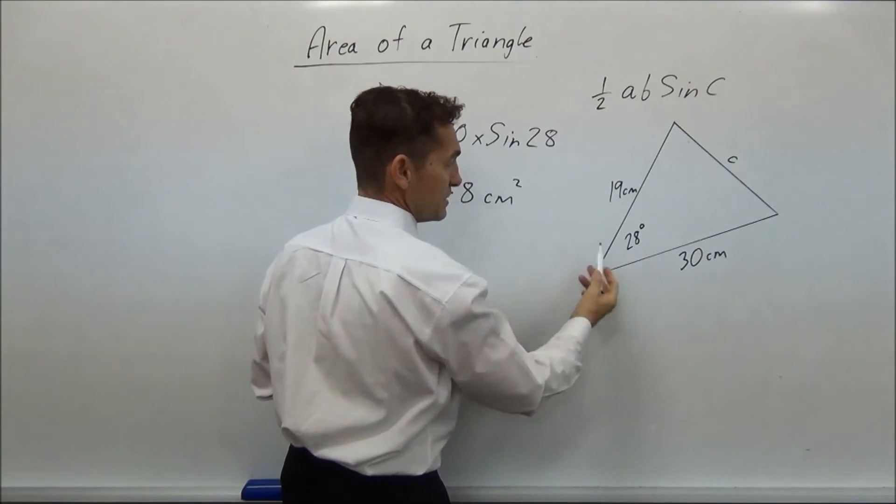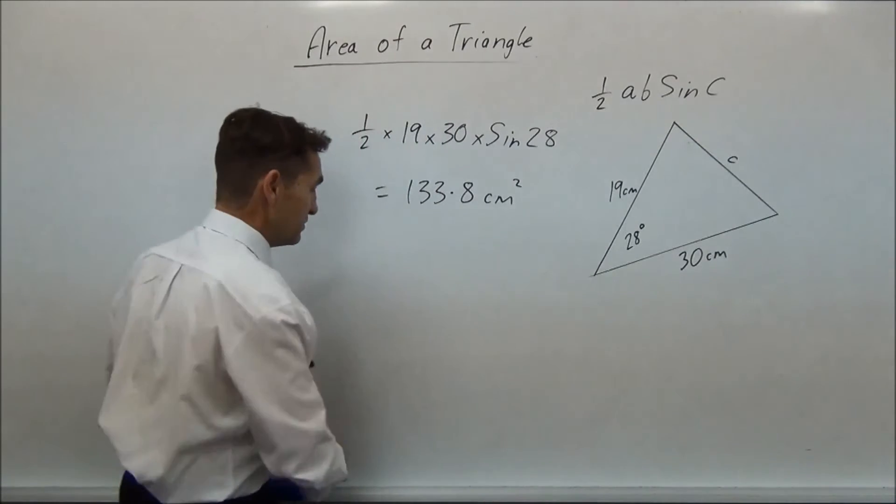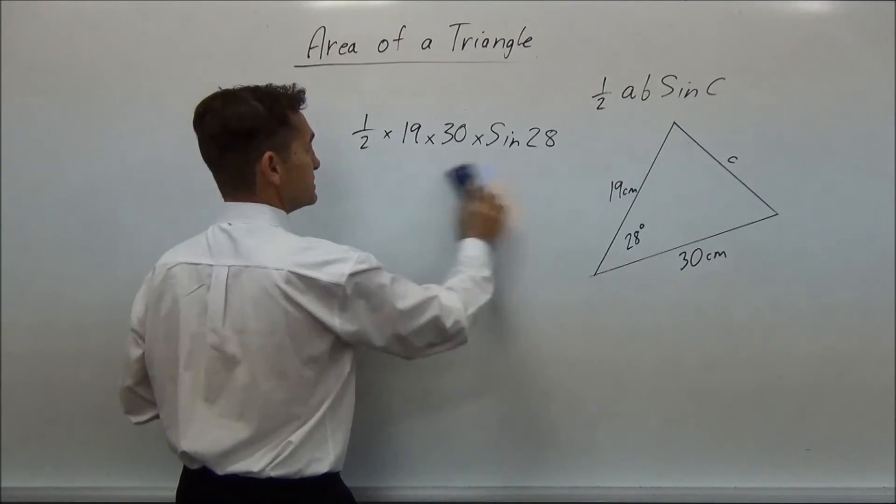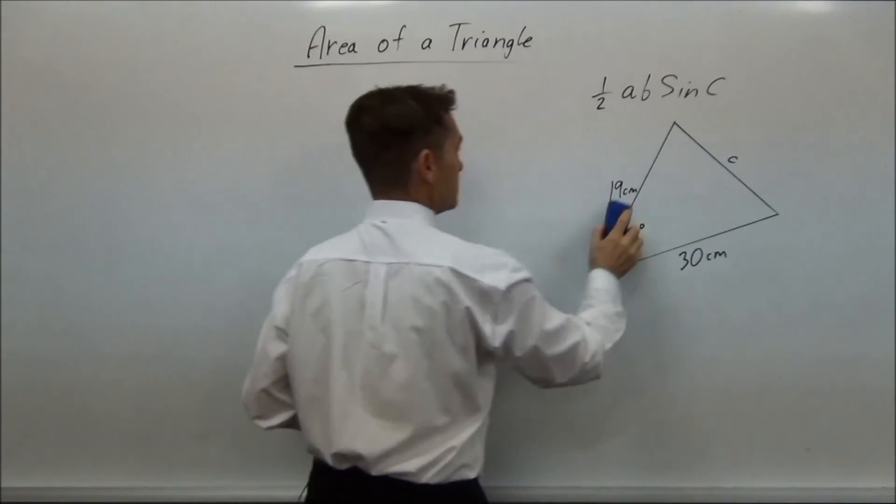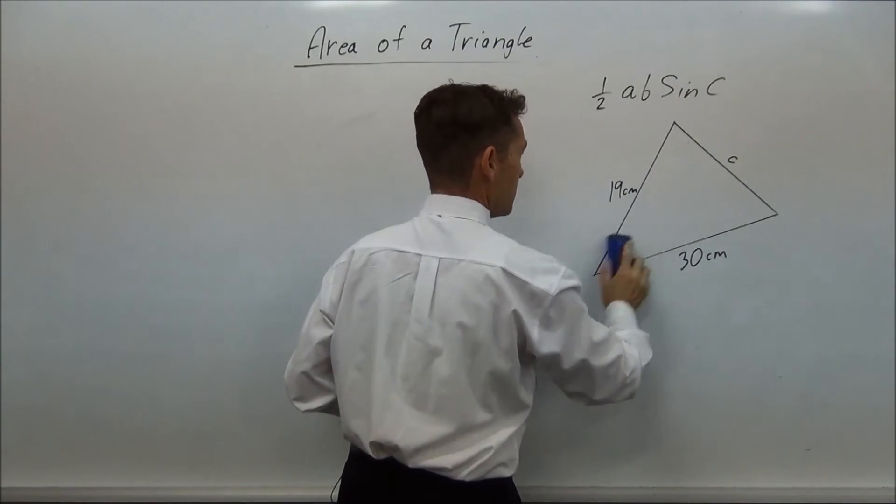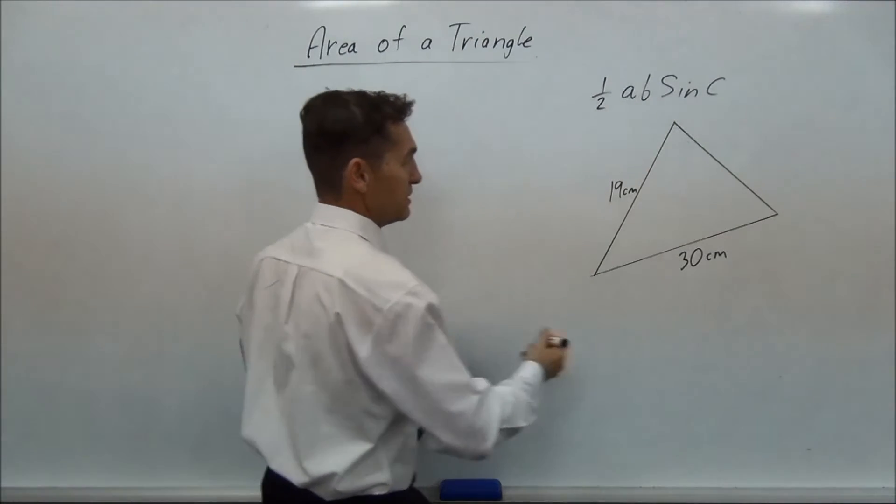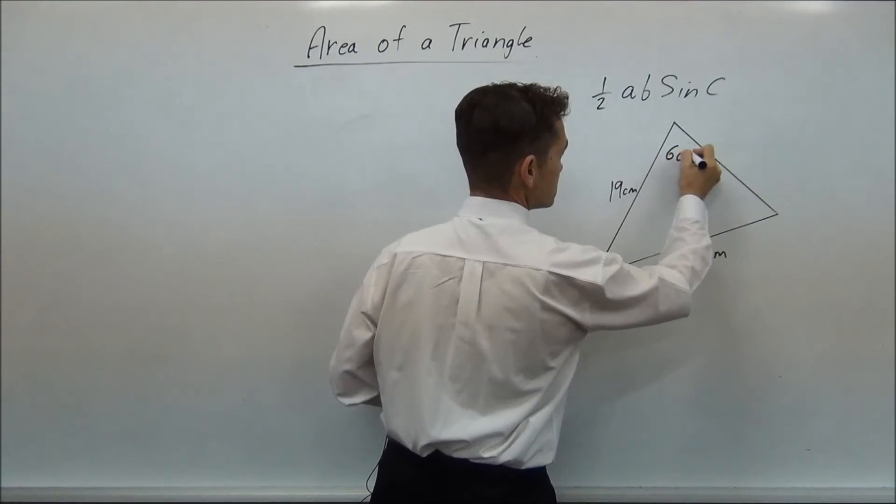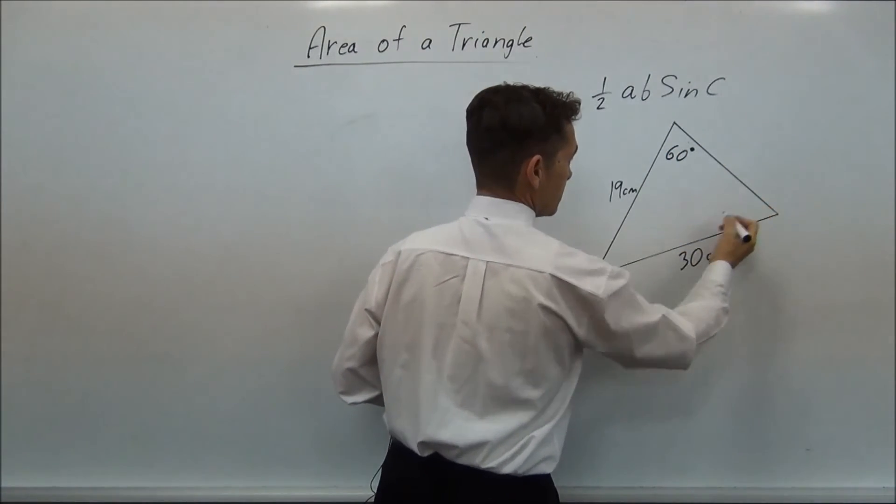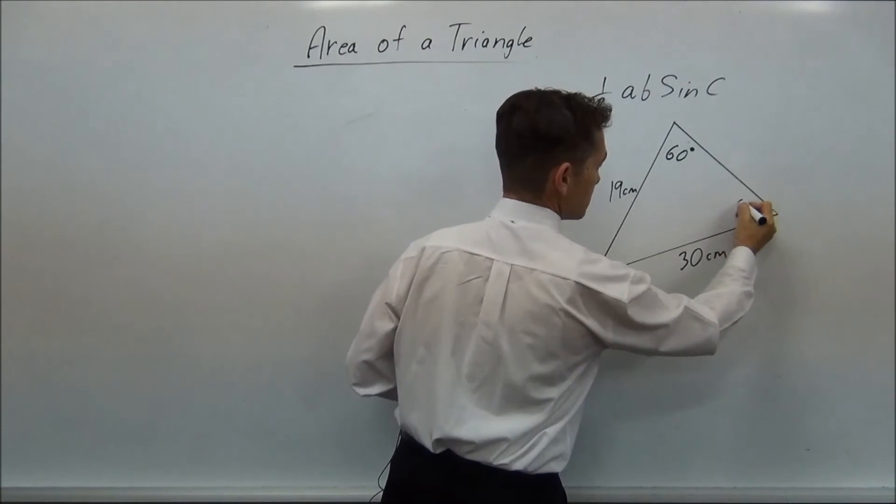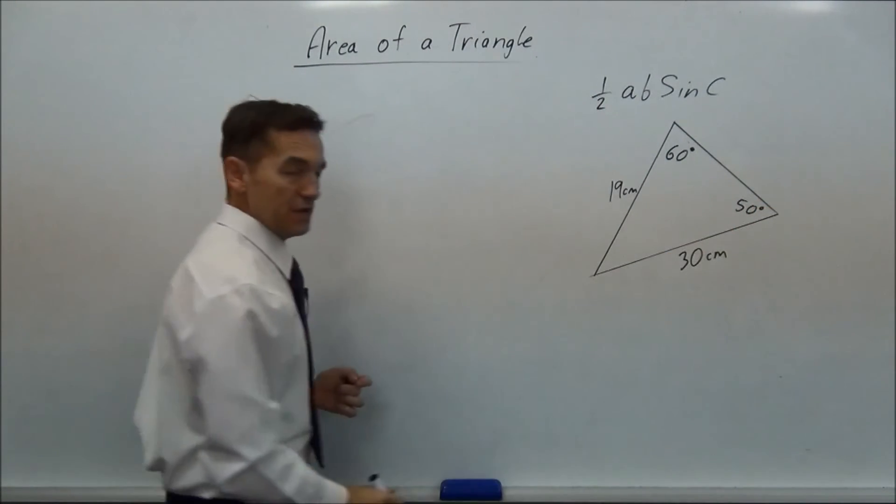Sometimes they might give you this, and we'll just do another one. Let's do a second example. We're going to use this formula, and we'll just change something. And this is probably as difficult as they can make it, is if they give you, that's 60, and they give you, that's 50, and they say, what's the area of the triangle?